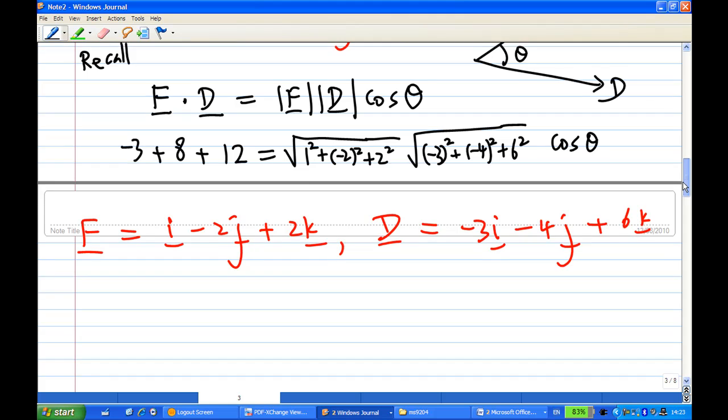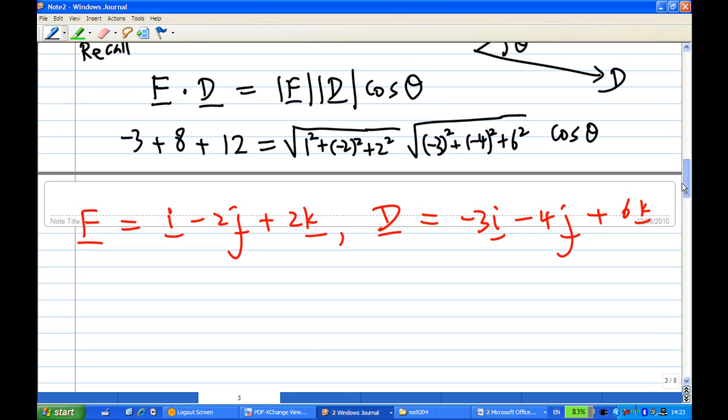We continue with this process. We find that the left hand side is 20 minus 3, you get 15, and you have square root of 9, which is 3, and square root of 9 plus 16, 25, 25 plus 36, you get 61 here.